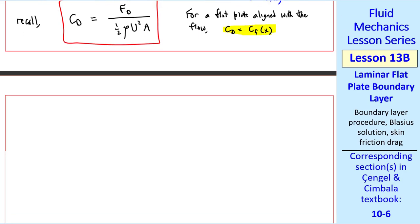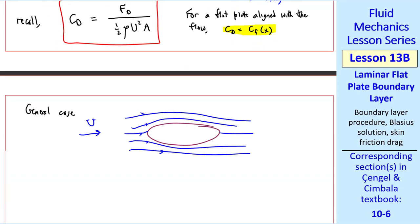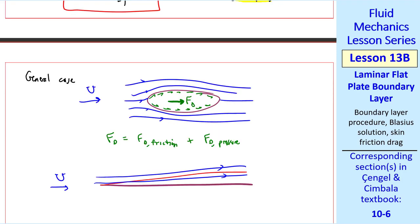As a side note here, for the general case of flow over some body, the total drag force is made up of two parts: friction drag, due to shear stress along the walls, and pressure drag, where the pressure in the aft region of the body is typically lower than the pressure in the front region. For our flat plate boundary layer, we have FD friction, but there's no pressure drag. By the way, this is typically called skin friction drag.